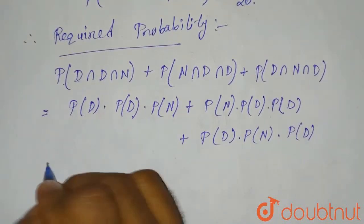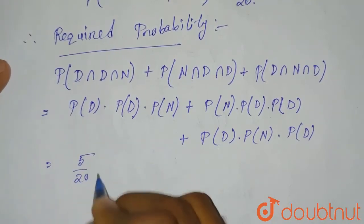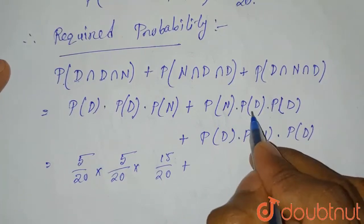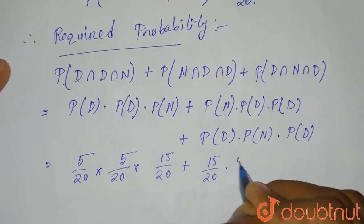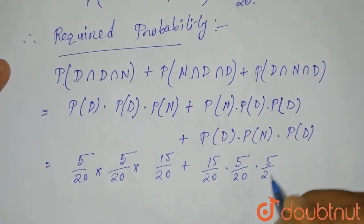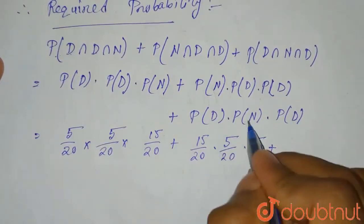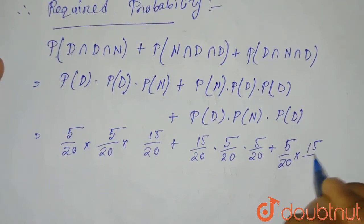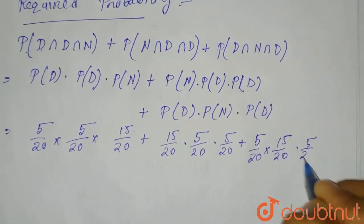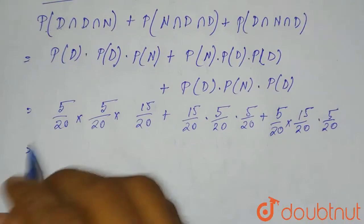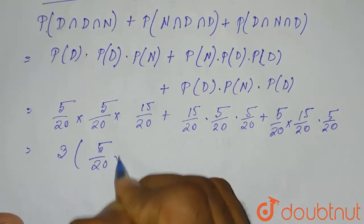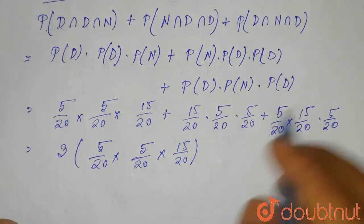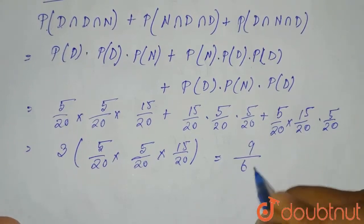Substituting values: probability of D is 5/20, so each term becomes (5/20) × (5/20) × (15/20). We can see all three terms are identical, giving us 3 × (5/20) × (5/20) × (15/20). After solving this, we find the result equals 9/64.